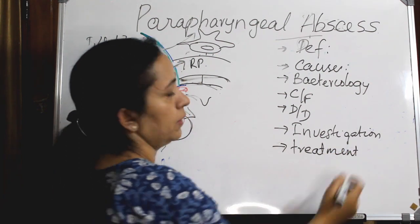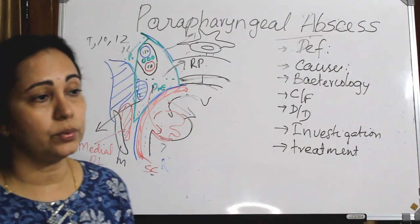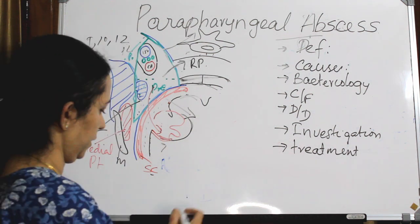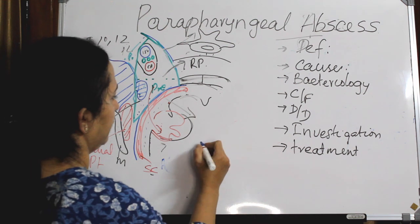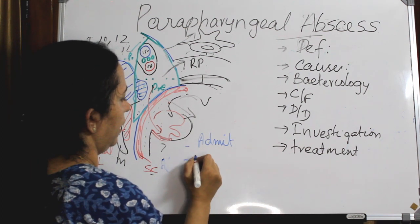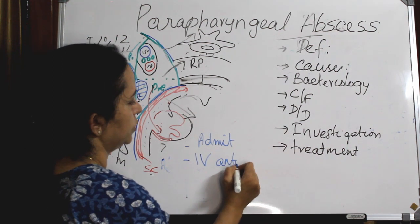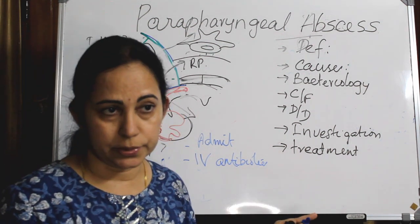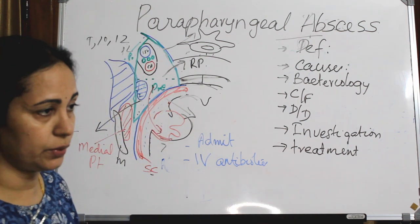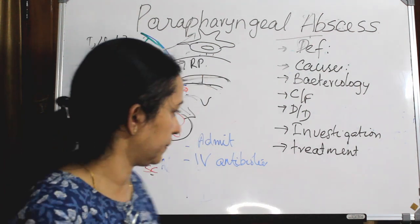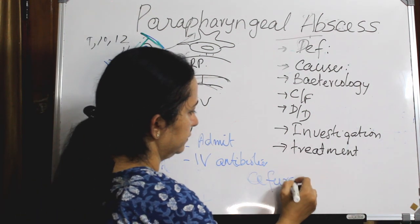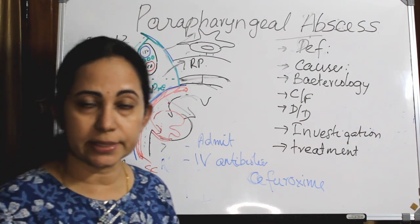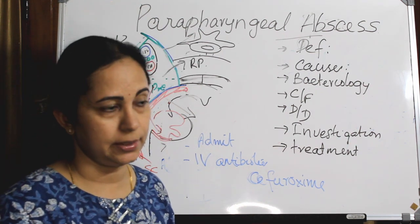For treatment, the first step is to hospitalize the patient and start IV antibiotics. The preferred choice is a third-generation cephalosporin given intravenously. Correct any fluid and electrolyte imbalance, ensure adequate hydration, and provide analgesics and anti-inflammatory medications as supportive measures.